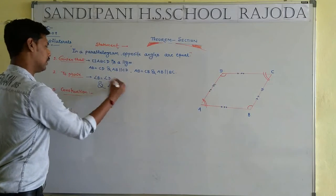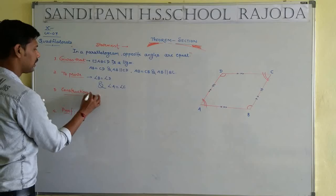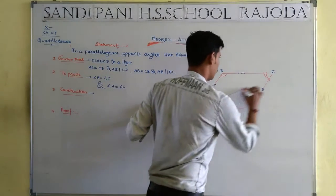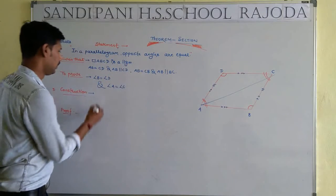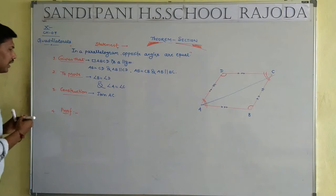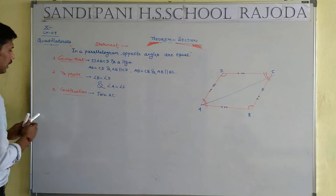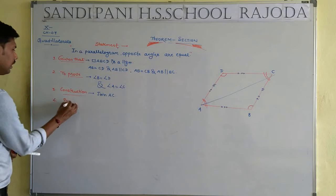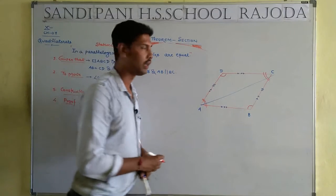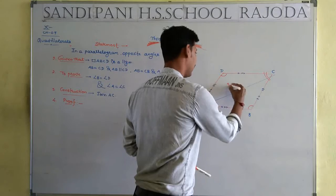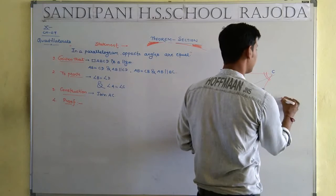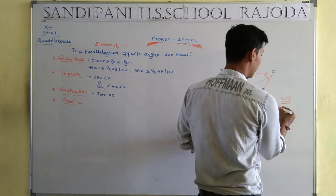And angle A will be equal to angle C. For construction, we join A to C. Now for the last and most important part — the proof. If you have watched the previous videos, you know we will prove both triangles equal and similar (congruent). The congruence rules are: RHS, SAS, ASA, AAS, and SSS.